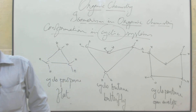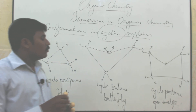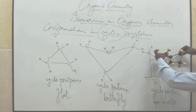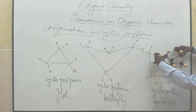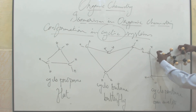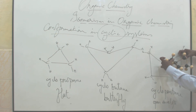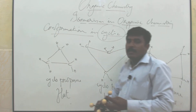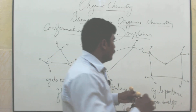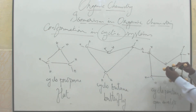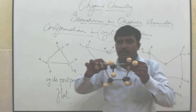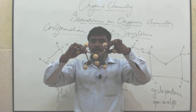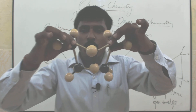Suppose if it is a 5-carbon ring, what is the name? Cyclopentane — and how will it be? Open envelope shape. See here: 1, 2, 3, 4, 5 carbon atoms — the middle one is down. Totally 5 carbon atoms in which shape? Open envelope shape.